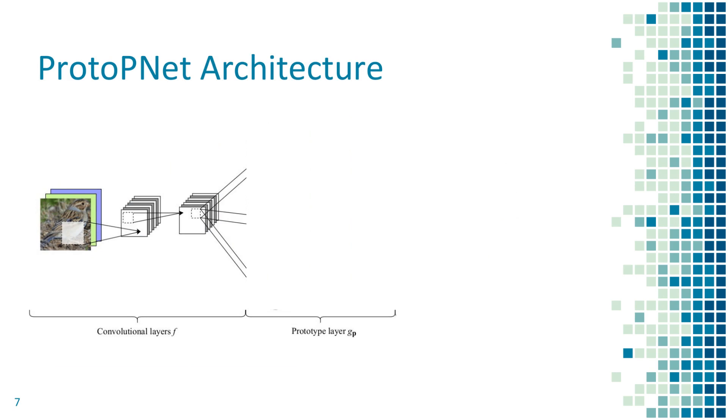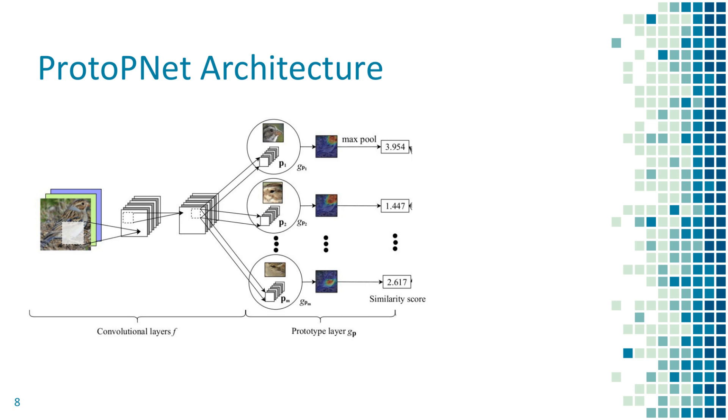More concretely, our ProtoP-Net introduces a special prototype layer that can follow any feature extraction convolutional layers. The prototype layer contains prototypes that can be understood as representations of typical parts in each class, such as red wings for the class of red-winged blackbirds.